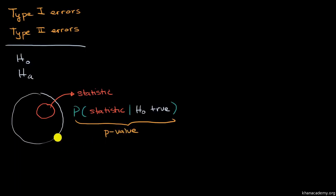This should all be review. We introduce it in other videos. If our p-value is less than our significance level, then we reject our null hypothesis. And if our p-value is greater than or equal to our significance level, alpha, then we fail to reject our null hypothesis.